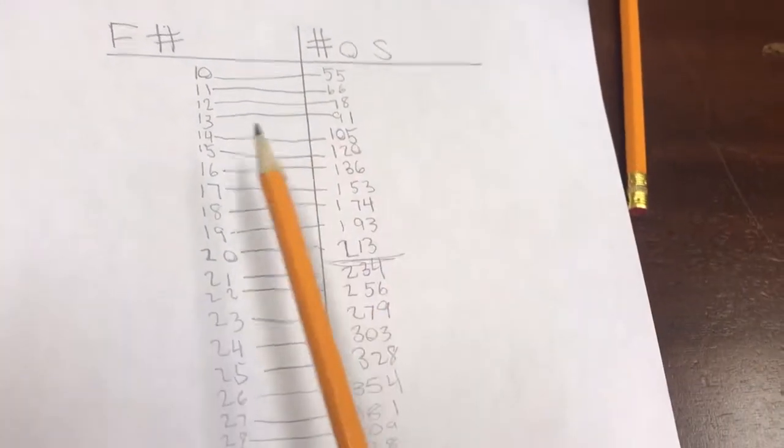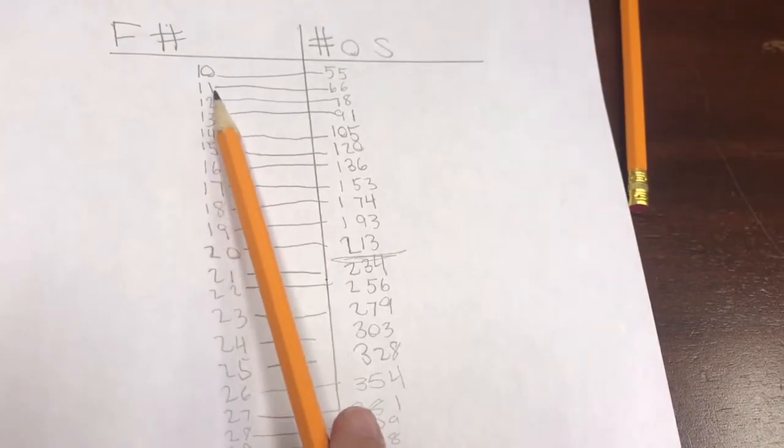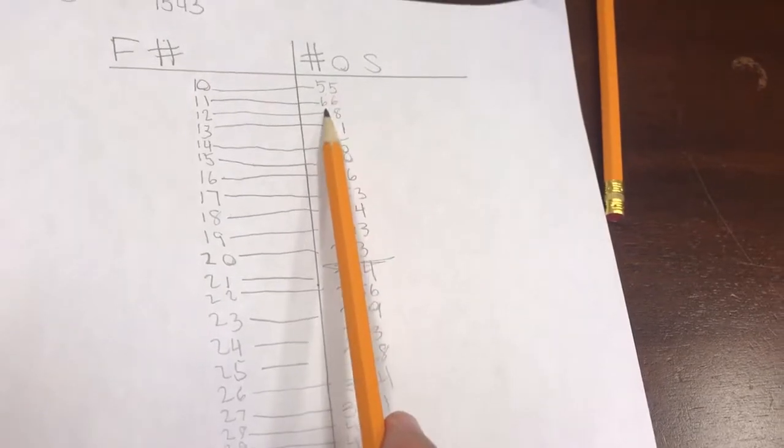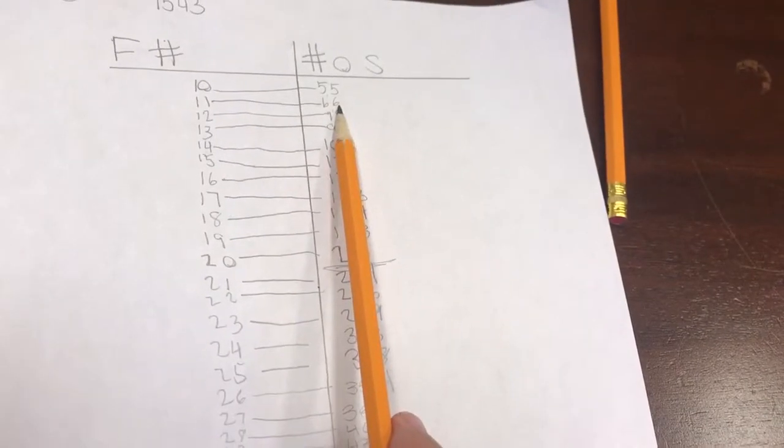So you mean if you add 11 to the previous number of squares, which is 55, you get 66, that one?